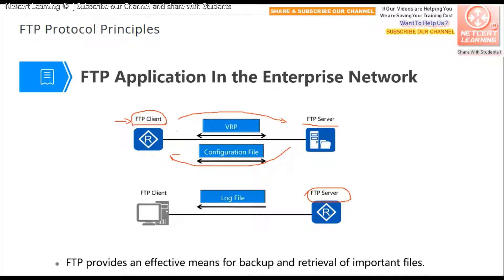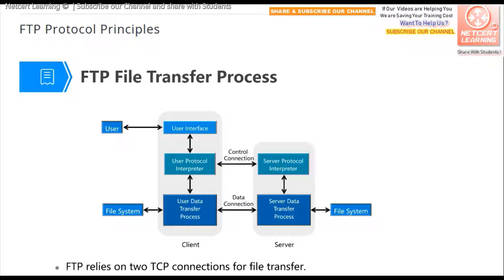When the Huawei network device works as the FTP client, it can upload and download files from another server running FTP server software — this can be a host or a computer. When the network device works as an FTP server, you can use a computer as an FTP client to download or upload files from the Huawei network device.